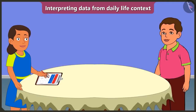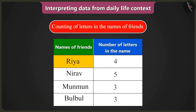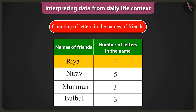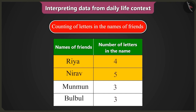And how is that? Look, Bubbly — here the first name is Riya, which is made from four letters, and you have written the number four. And the second name is Nirav, which is made from five letters. Your table is okay till here. Now the third name is Munmun. There are not three but six letters in it.